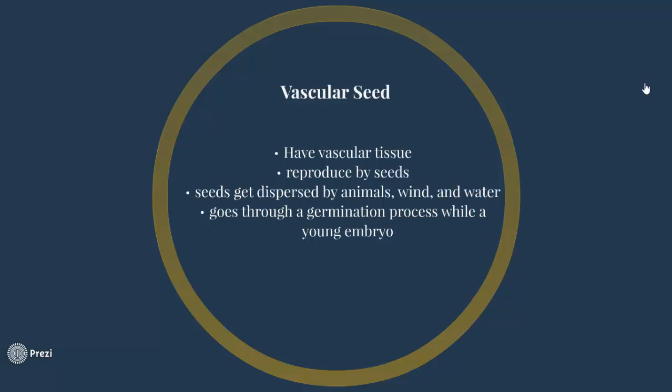Vascular seeded plants reproduce by seeds, and those seeds are dispersed by animals, wind, and water. The seeds go through a germination process while they are a young embryo. Animals disperse seeds by eating them as part of a fruit — like an apple — and once the animal defecates, the seed is planted and fertilized wherever the animal decided to do its business.